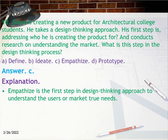Question 10: Sawyer is creating a new product for architectural college students. He takes a design thinking approach. His first step is addressing who he is creating the product for and conducts research on understanding the market. What is this step in the design thinking process? A) Define, B) Ideate, C) Empathize, D) Prototype. Answer C. Explanation: Empathize is the first step in the design thinking approach to understand the users' or market's true needs.